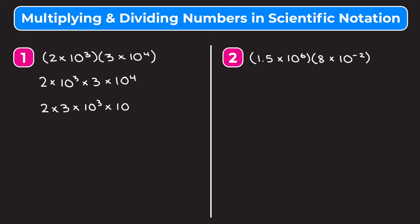It's easier to see what's going on if we put the powers of 10 together and the other two numbers together when multiplying. We multiply the two numbers in front — 2 times 3 is 6 — and then multiply 10 to the third times 10 to the fourth. When multiplying exponent terms with the same base of 10, we add the exponents: 3 plus 4 gives 10 to the seventh. So our answer is 6 times 10 to the seventh.